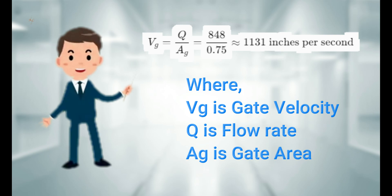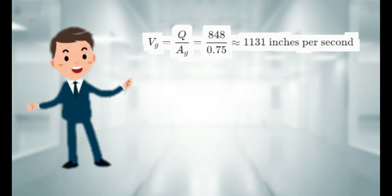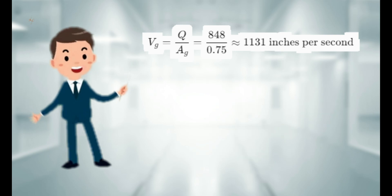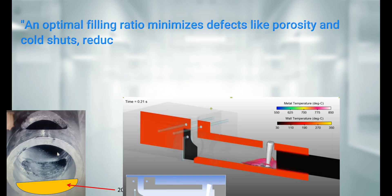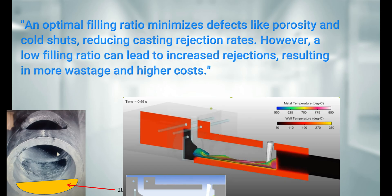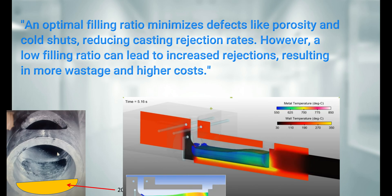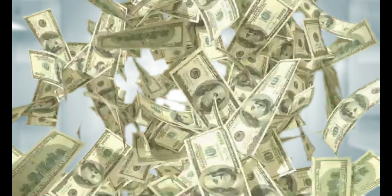All of this impacts casting rejection rates. If your filling ratio is optimal, you are less likely to see defects like porosity or cold shuts. But if it is too low, you might face higher rejection rates, which means more wastage and higher costs.